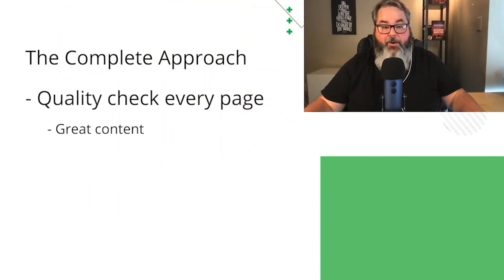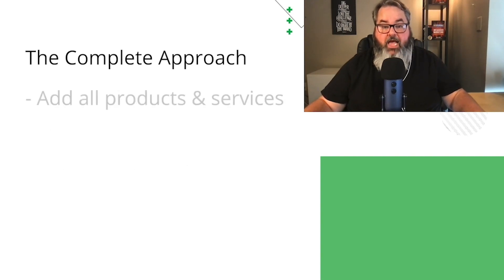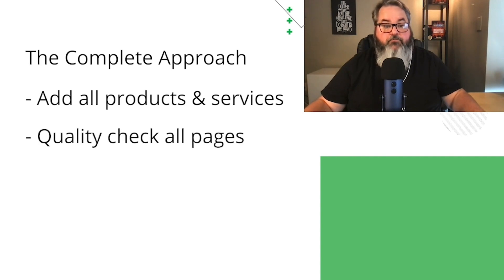Keep in mind there are a couple of different approaches you can take to get your website published and operating. First, you can go through and make sure all your live pages are full of great content, present calls to action to move visitors through the customer journey, funnel them down to purchase, and then publish. Or you can continue adding products or services so your full catalog is online when you publish. I recommend getting a few products up and published, then adding new ones as you go. You'll also want to see your site live and make a list of small things you want to change.